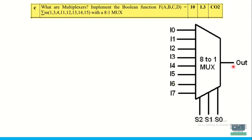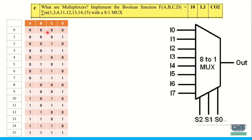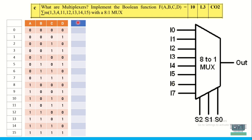Now let us implement a Boolean function f(a, b, c, d) = Σm(1, 3, 4, 11, 12, 13, 14, 15). Let me write a truth table first for four variables a, b, c, d from 0 0 0 0 to 1 1 1 1. I am numbering these values according to the function given, so 0 corresponds to 0 0 0 0 for a b c d, and 15 corresponds to 1 1 1 1.